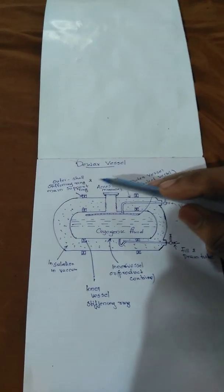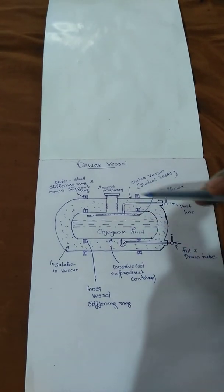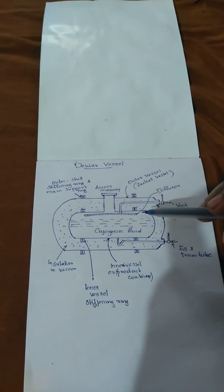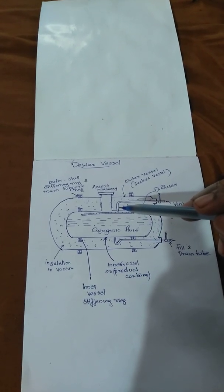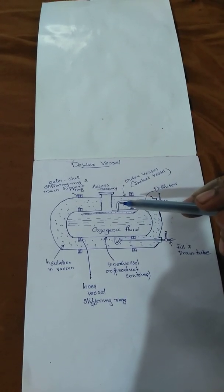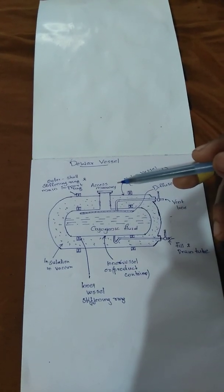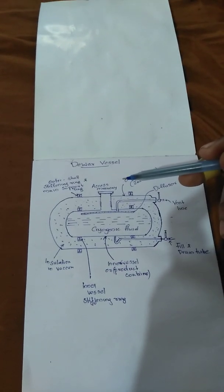In most cases, these Dewar vessels will be designed in spherical, cylindrical, or elliptical shapes because it will be very easier for transporting. I think you are able to understand my video. If you like my video, please like, share, and subscribe.